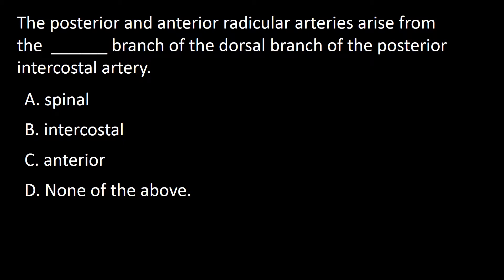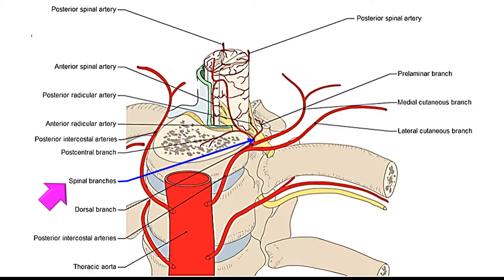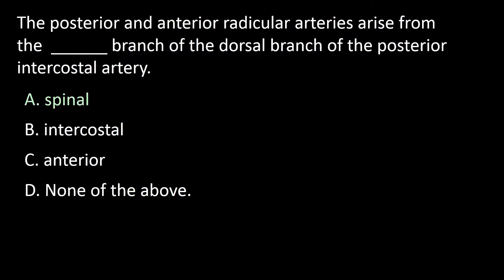Next question: the posterior and anterior radicular arteries arise from the dash branch of the dorsal branch of the posterior intercostal artery. A: spinal, B: intercostal, C: anterior, D: none of the above. The posterior radicular arteries supply the ipsilateral posterior spinal artery, whereas the anterior radicular artery supplies the anterior spinal artery. The anterior radicular artery is an offshoot of the spinal branch, which arises from the dorsal branch of the posterior intercostal artery. So the answer to this question is A.